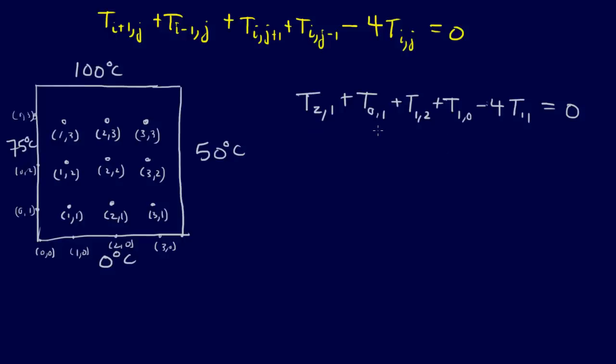But, there's a little bit of information that we know here, right? We know this value, T_{0,1}, and we know T_{1,0}. Right? Let's see, T_{0,1}, that's 75. And T_{1,0}, so that's 0. So, we can just plug that in, so then we have T_{2,1} plus T_{1,2} minus 4T_{1,1} equals - we just bring the 75 to the other side - minus 75.